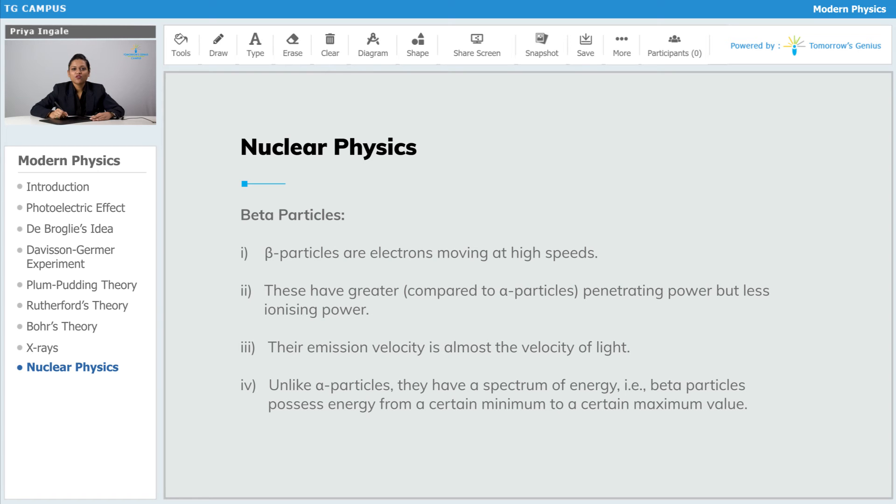Unlike alpha particles, they have a spectrum of energy. Beta particles possess energy from a certain minimum to a certain maximum value. That means, unlike alpha particles, they do not have a fixed energy. They have a spectrum from the minimum wavelength to the maximum wavelength.